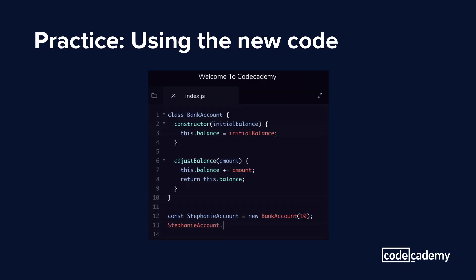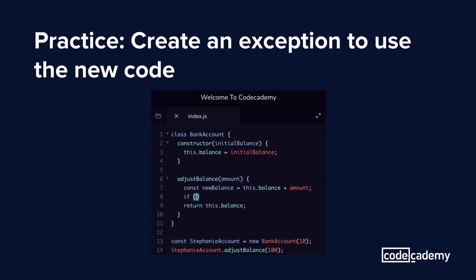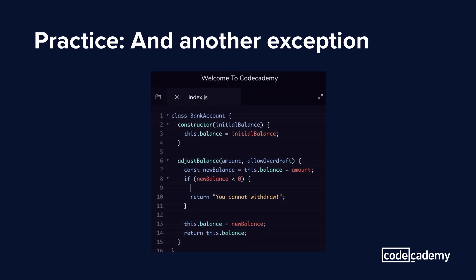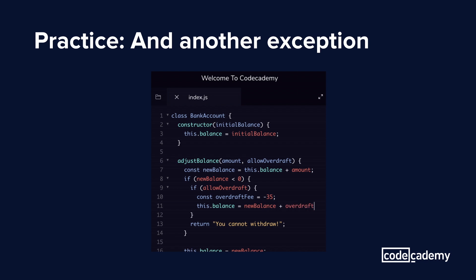Now any deposits will be represented by positive numbers passed as arguments to the adjustBalance function, and withdrawals will be represented by negative numbers. Seems pretty straightforward, right? But we all know that people can't withdraw if their balance dips below zero — so here enters our first exception. If the new calculated balance is less than zero, we should return an error message. Then we need to update the balance for when the deposit or withdrawal is valid.